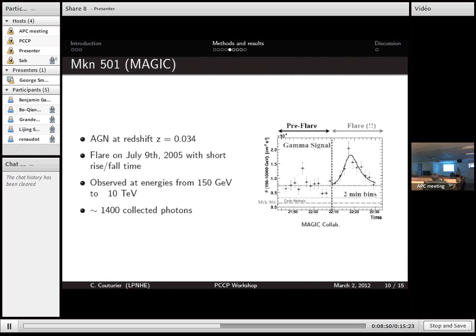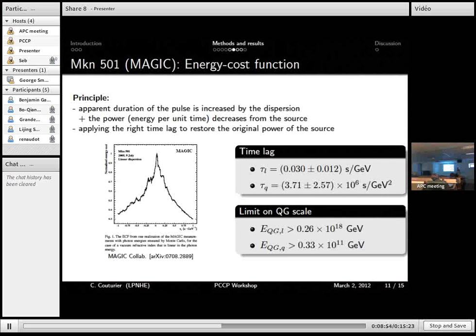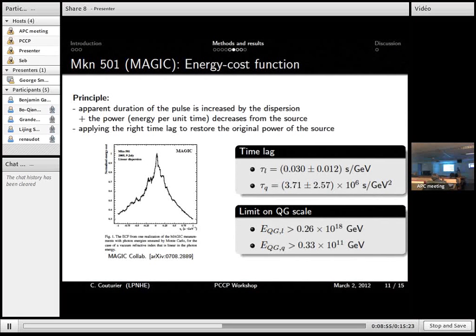And they applied two methods. One is the energy cost function. So it uses the fact that, an hour pulse, the apparent duration of the pulse would increase if there would be dispersion. And also the power, that means the energy per unit time decreases as we go away from the source. So we have to find the right time lag to apply in order to restore the original power of the source.